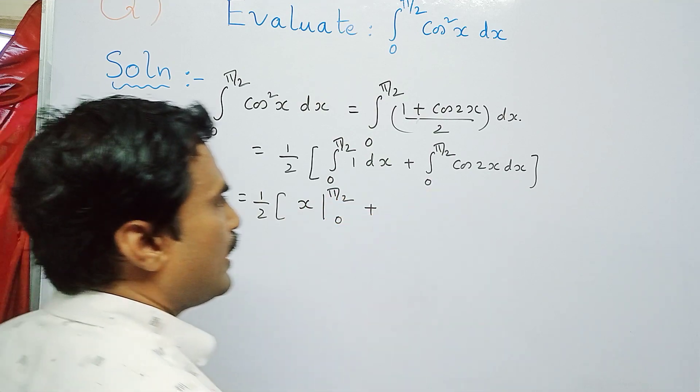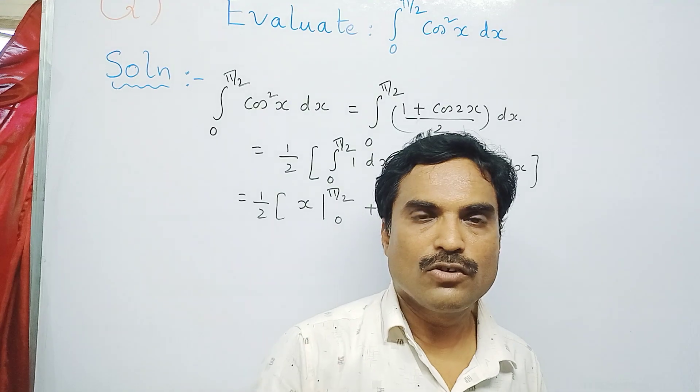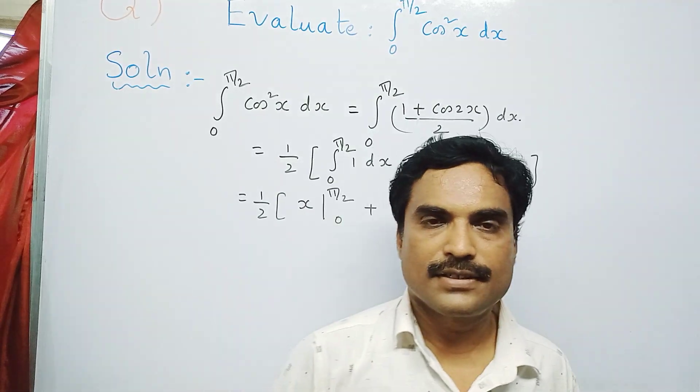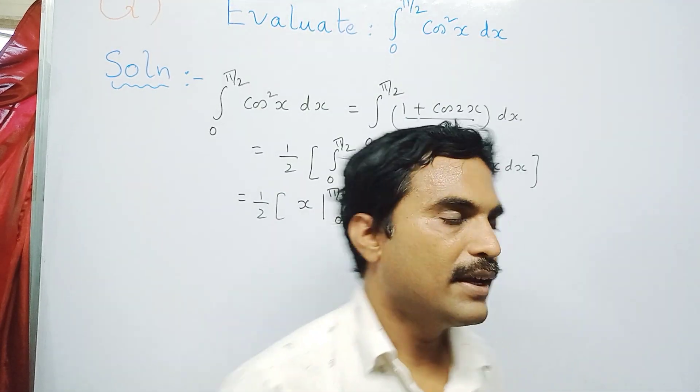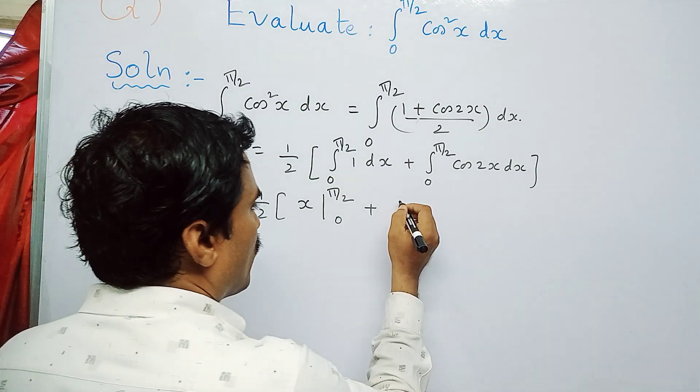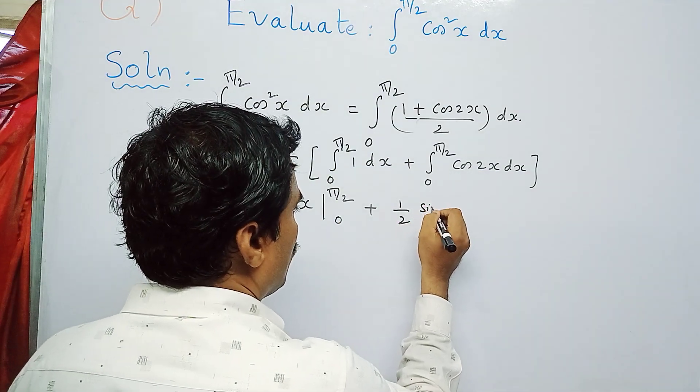Plus, now integral cos2x dx, we have to use the formula of integral cos(ax) dx, that is 1/a sin(ax). So here a is 2, so 1/2 sin2x. Put the limits π/2, 0.